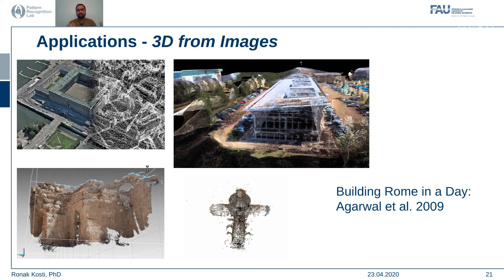Two years later, the same team produced a follow-up called 'Building Rome in a Cloudless Day.' They removed blurry images and those with poor lighting conditions, which gave them speedups — instead of using a large cluster of GPUs, they used just a small cluster and were able to create the image of Rome with fewer images.